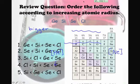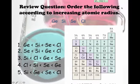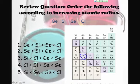So let's just do a bit of review real quick, see if you can remember how atomic radius goes. Now these are not ions, these are atoms. So let's put the following atoms in order by increasing atomic radius. We've got germanium, silicon, selenium, and chlorine.